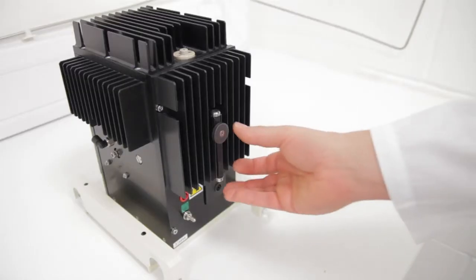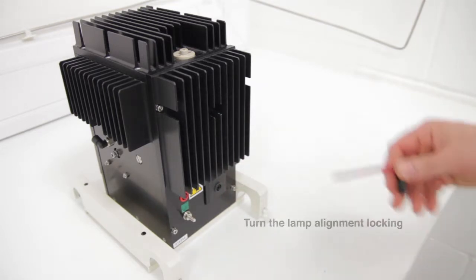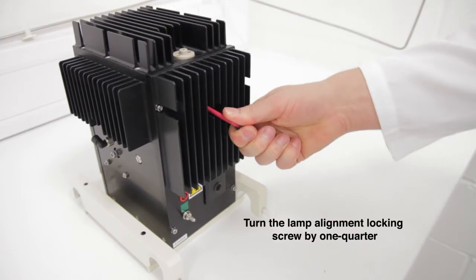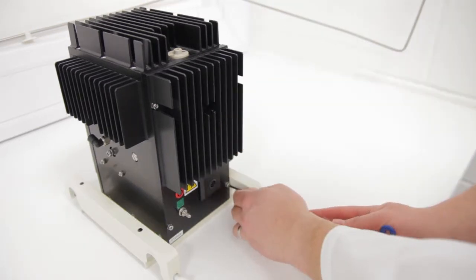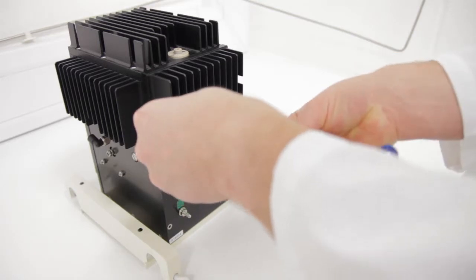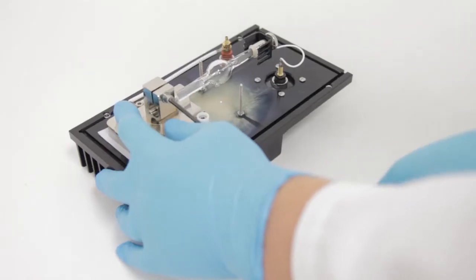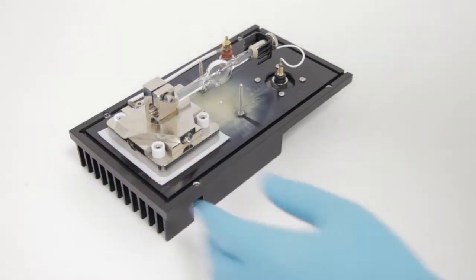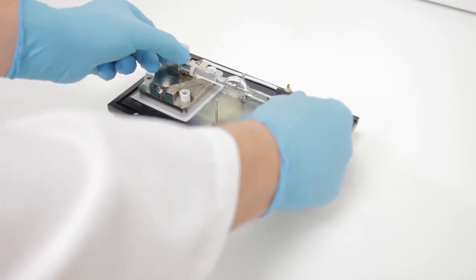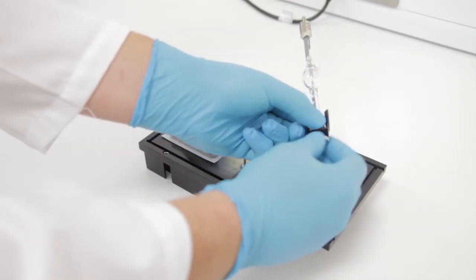If present, remove the lamp stabilizing magnet from the rear of the lamp housing. Loosen the lamp alignment locking screw and unscrew the four retaining screws. Carefully remove the lamp housing back panel. Loosen the clamping screw on the anode mounting block. Being careful not to touch the glass, grip the lamp by its cathode and remove it from the mounting block.